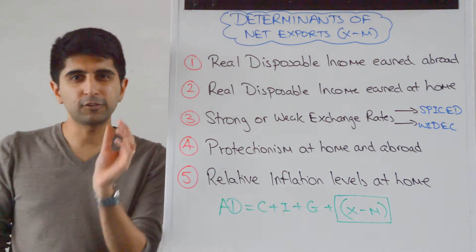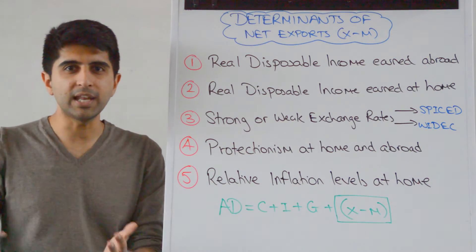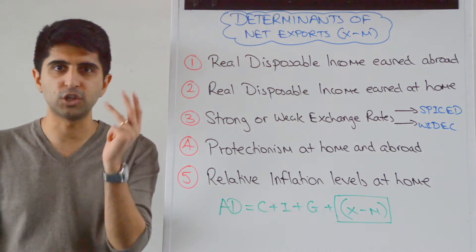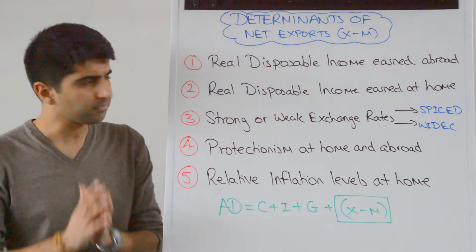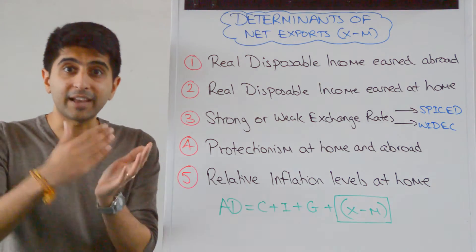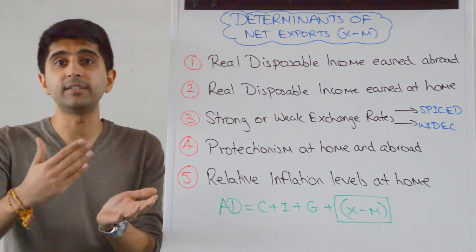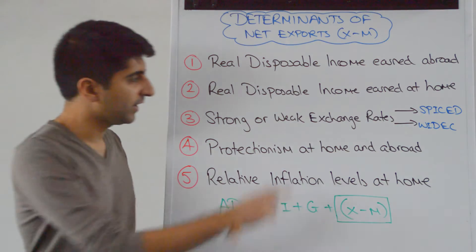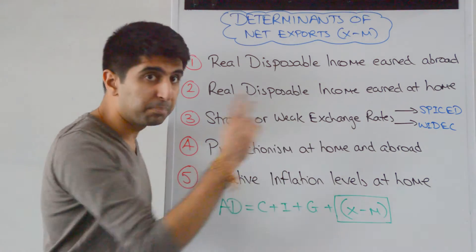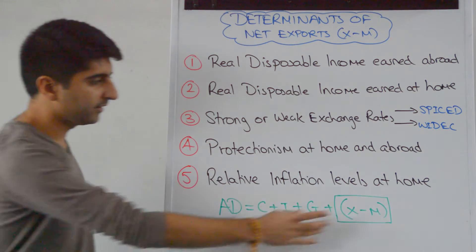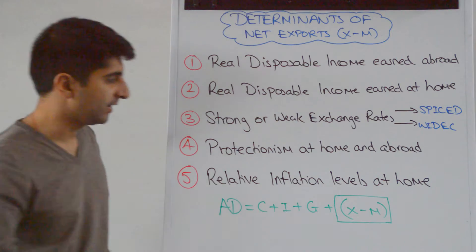So a weak exchange rate is great, especially for a trading economy like Japan or China or Germany. It's great news because X minus M will increase and AD will shift to the right. So that's a big determinant of X minus M and therefore of AD.